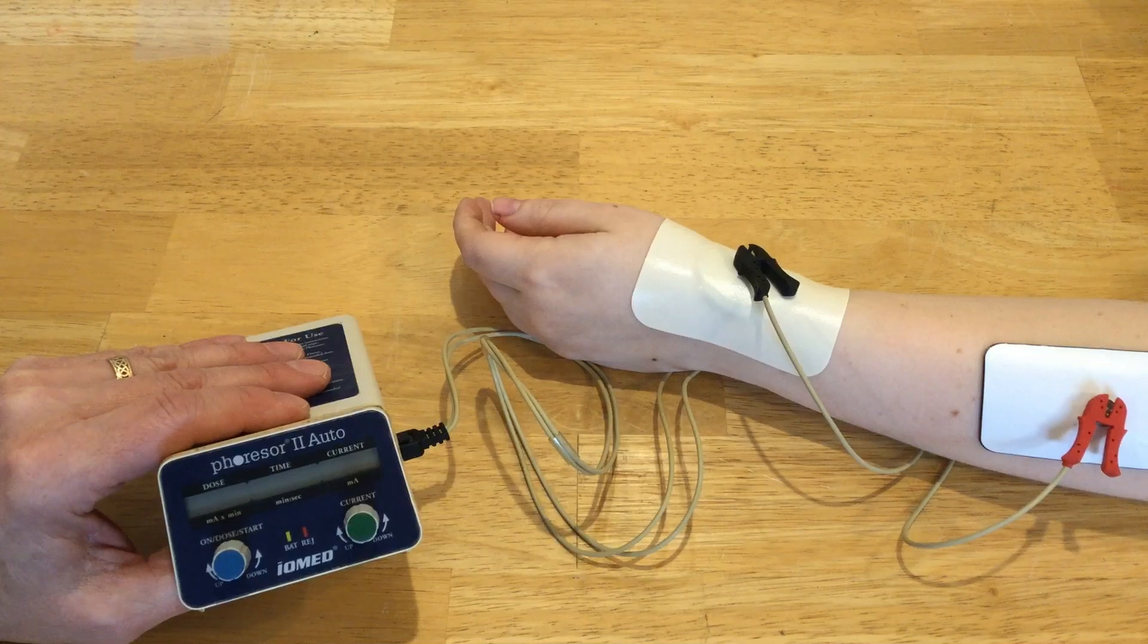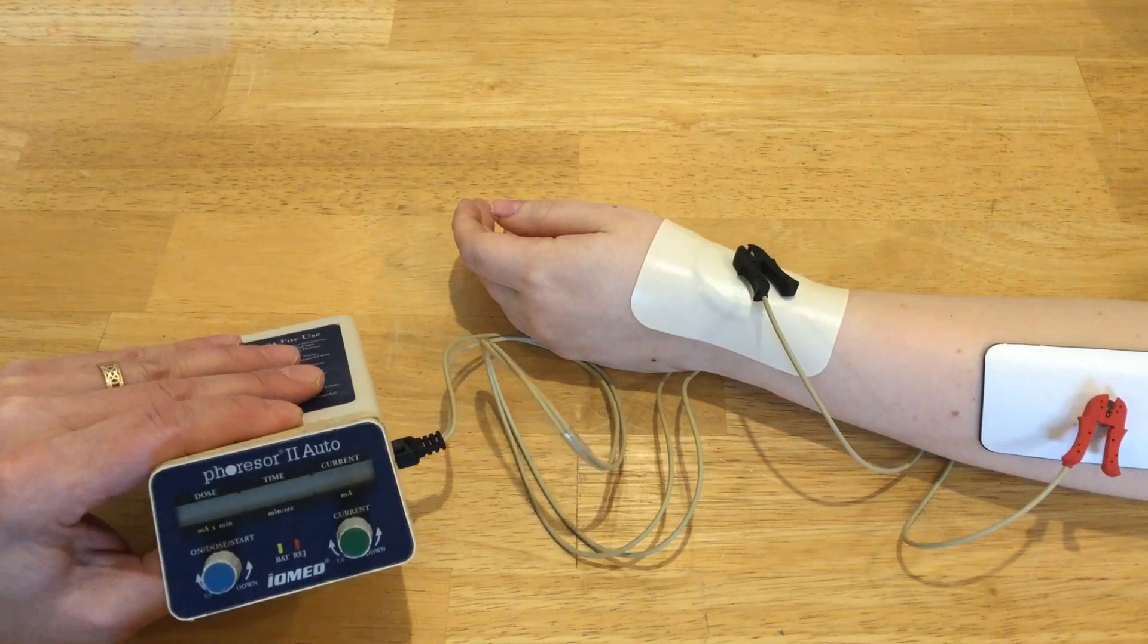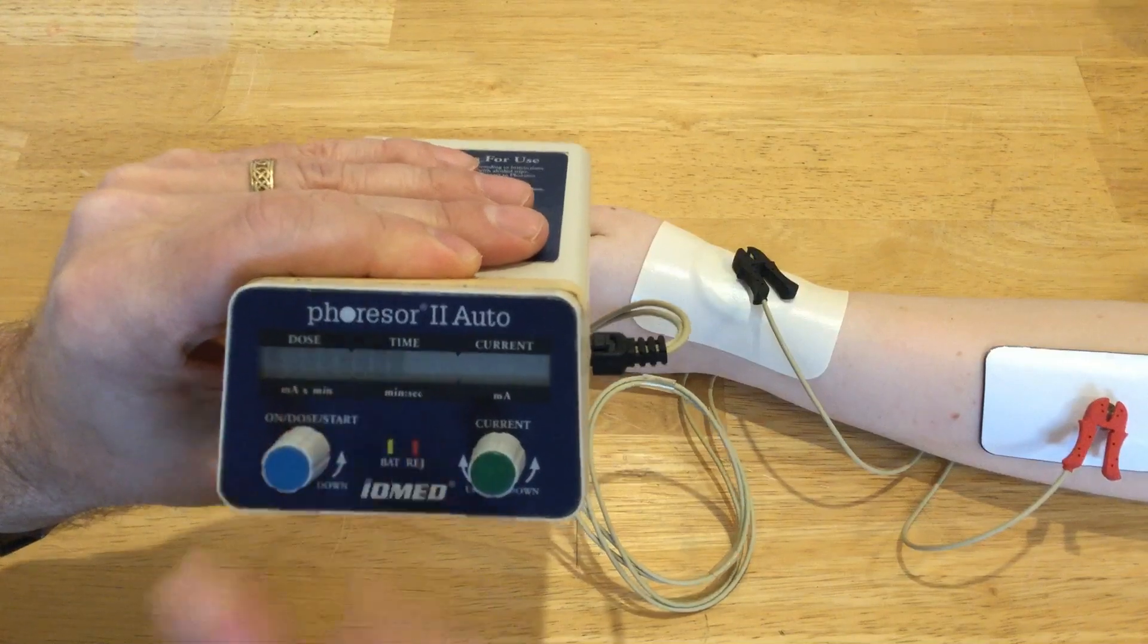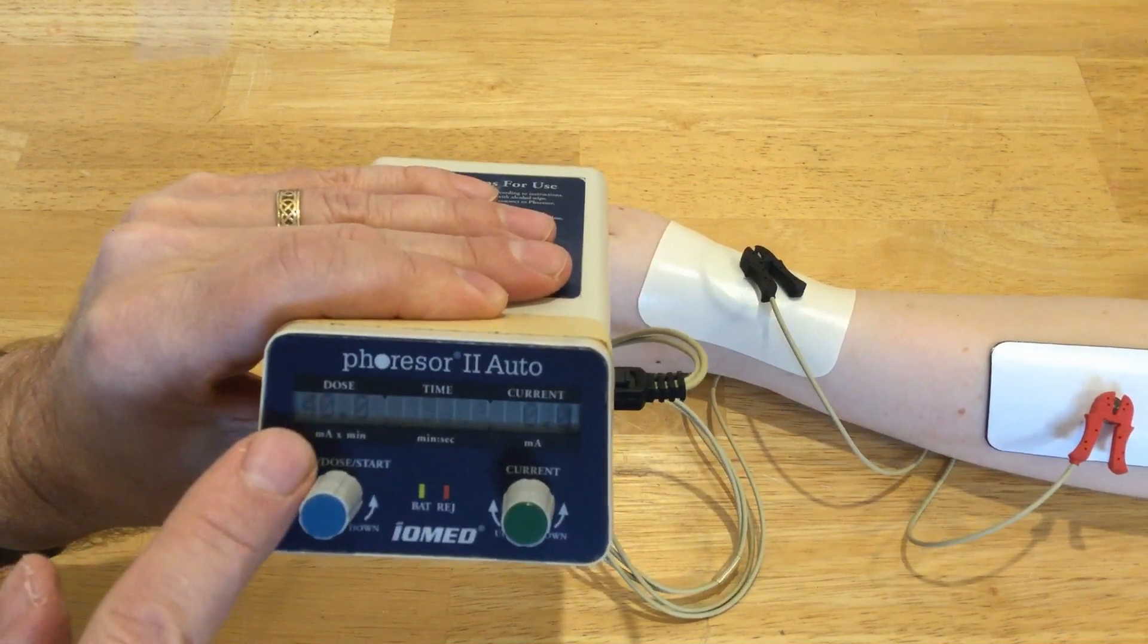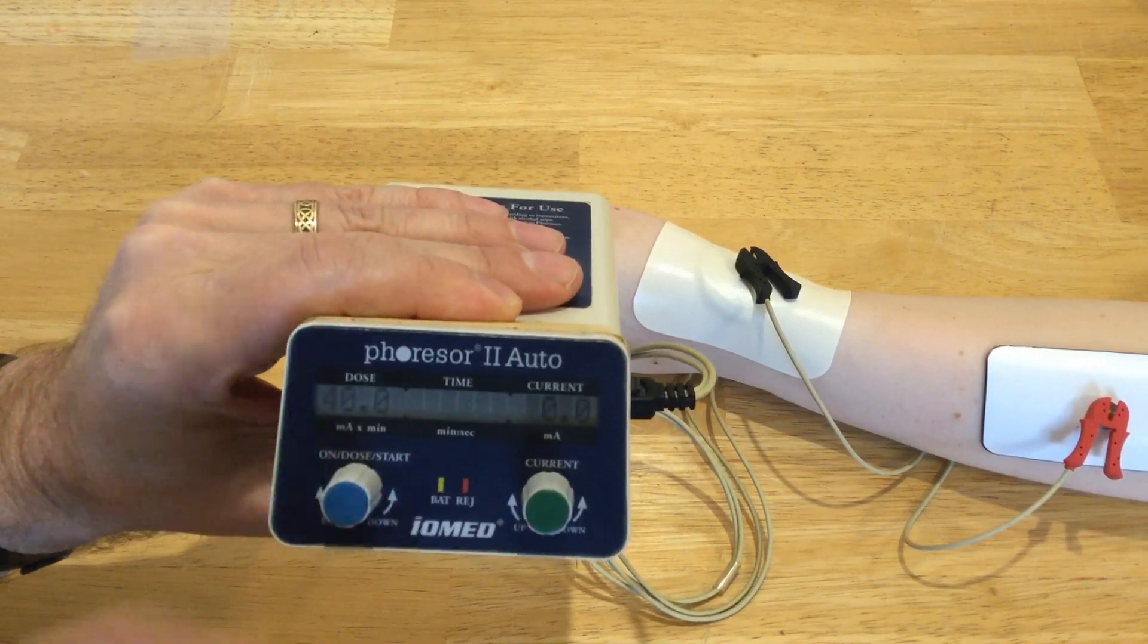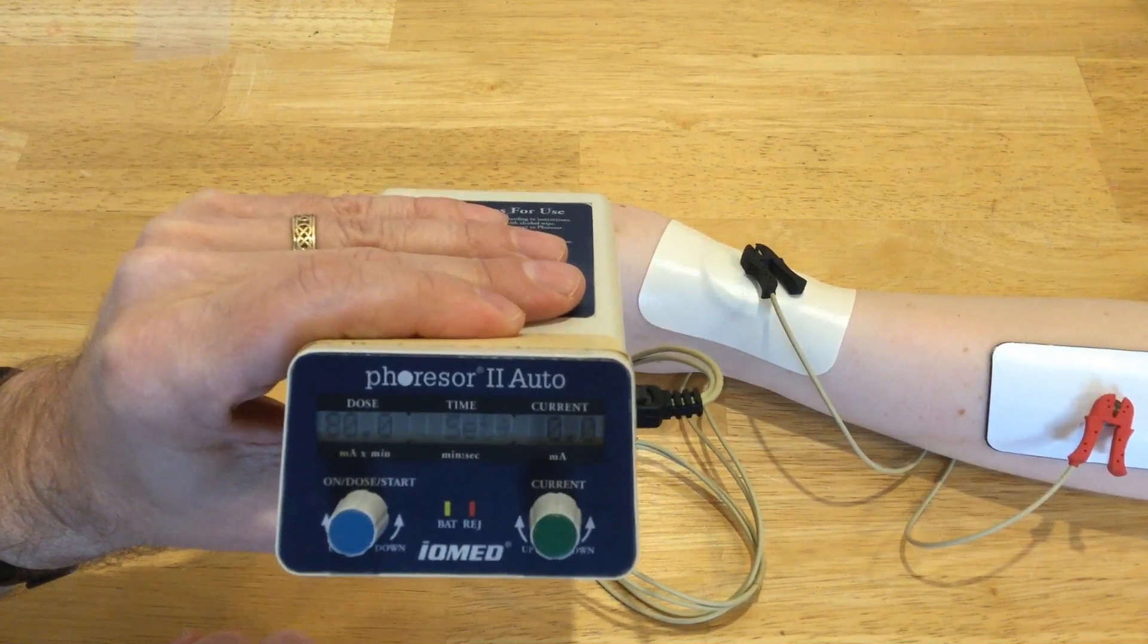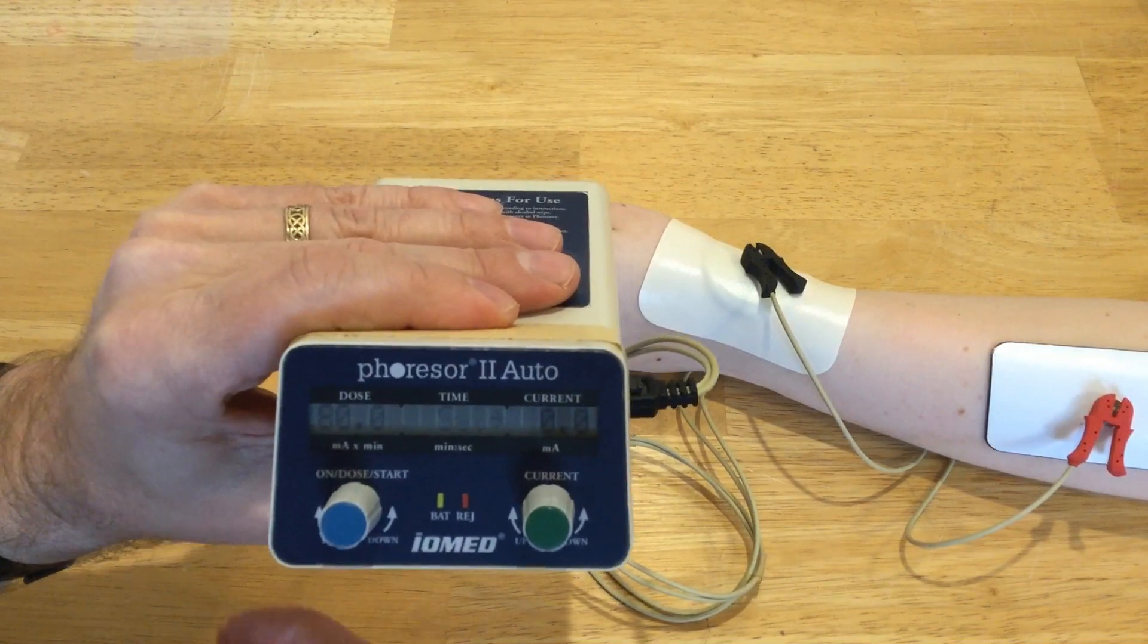Now that our electrodes are hooked up, I'm going to show you how to set the parameters on the machine. You turn it on by turning this left knob clockwise and it will do its system check. Then it will ask you to set the dose. Initially the dose is set at 40 milliamp minutes. You can set it anywhere from zero to 80 milliamp minutes. A higher dose means more medication has gone in and also makes the treatment take longer.